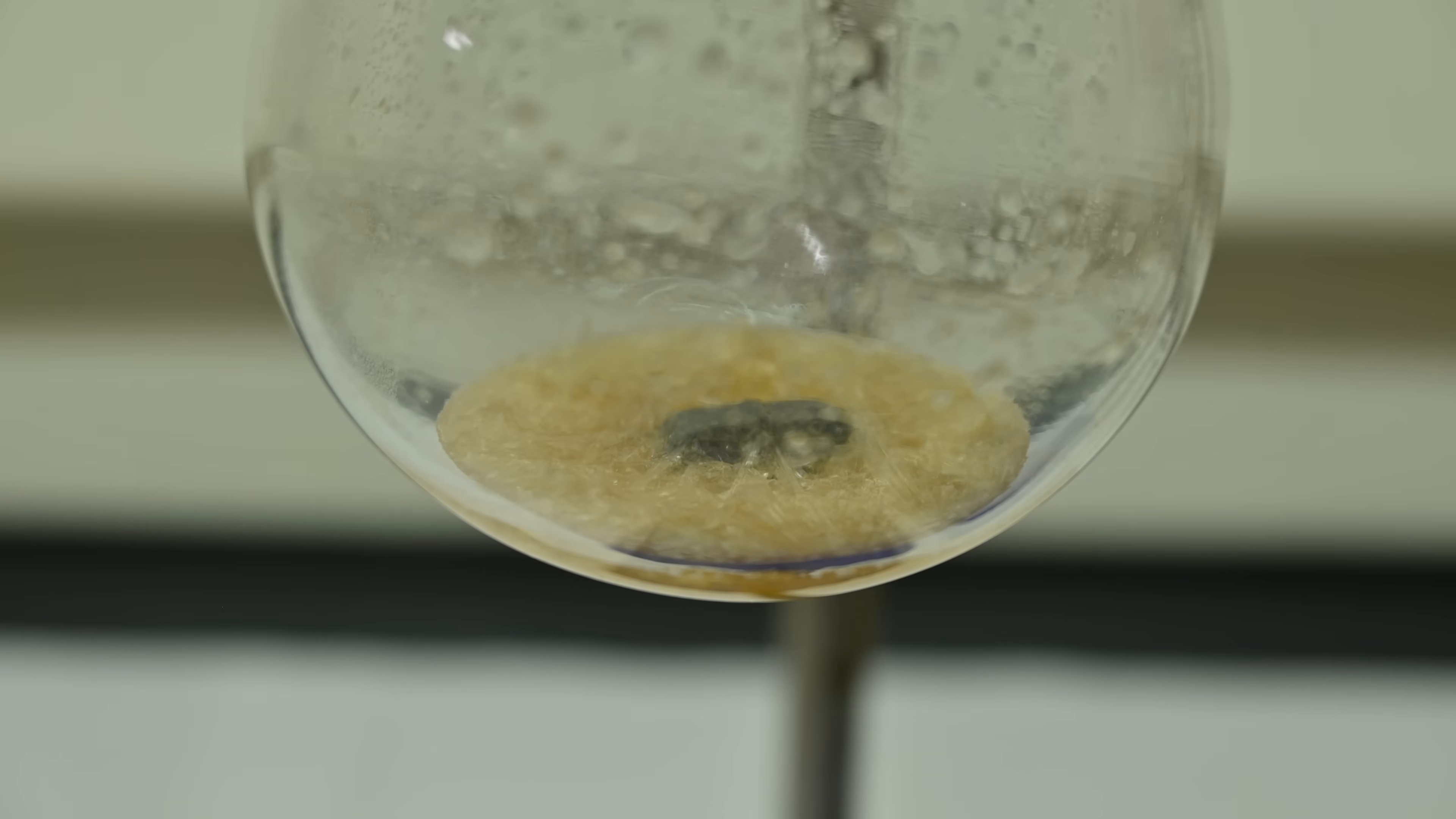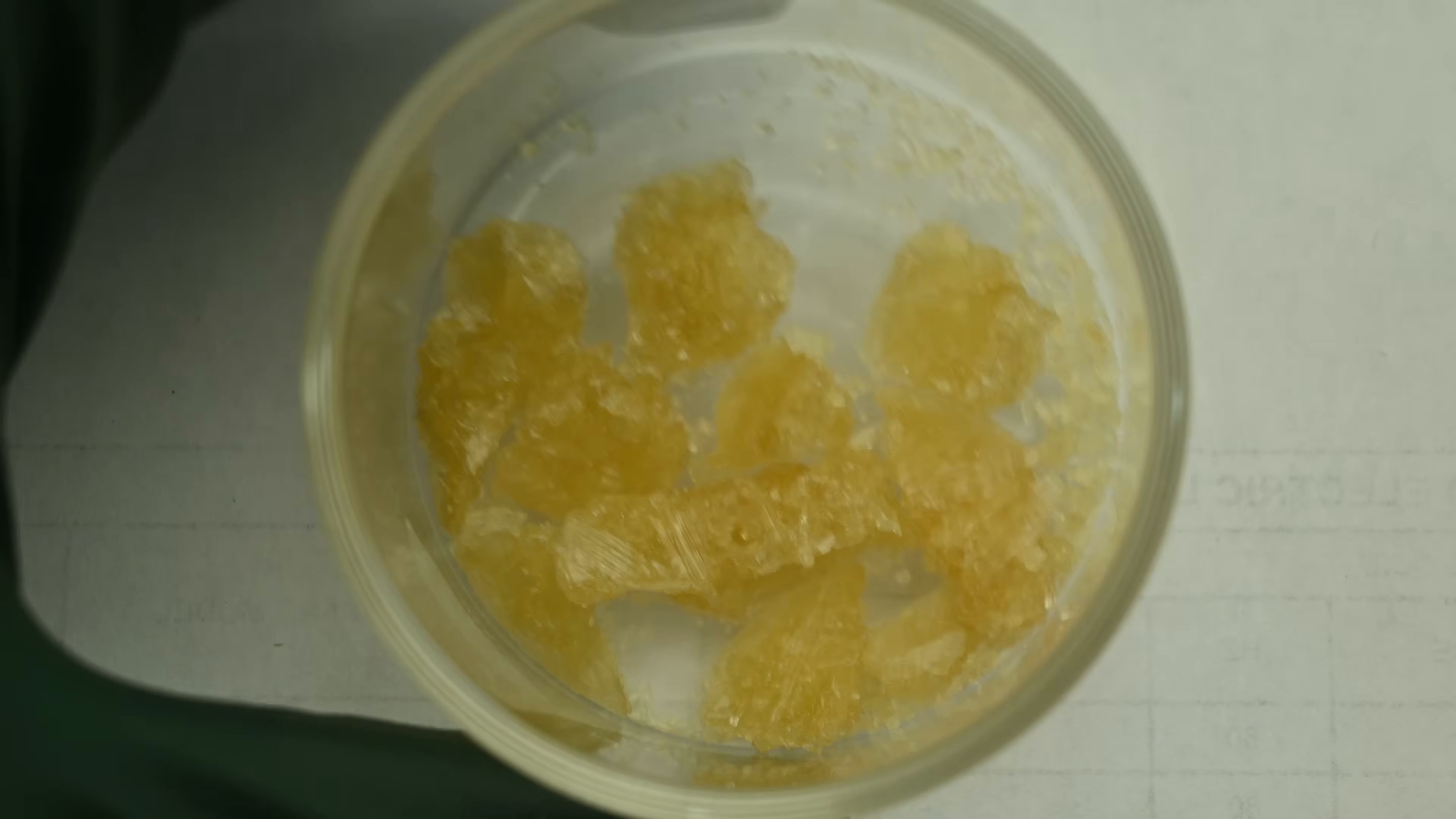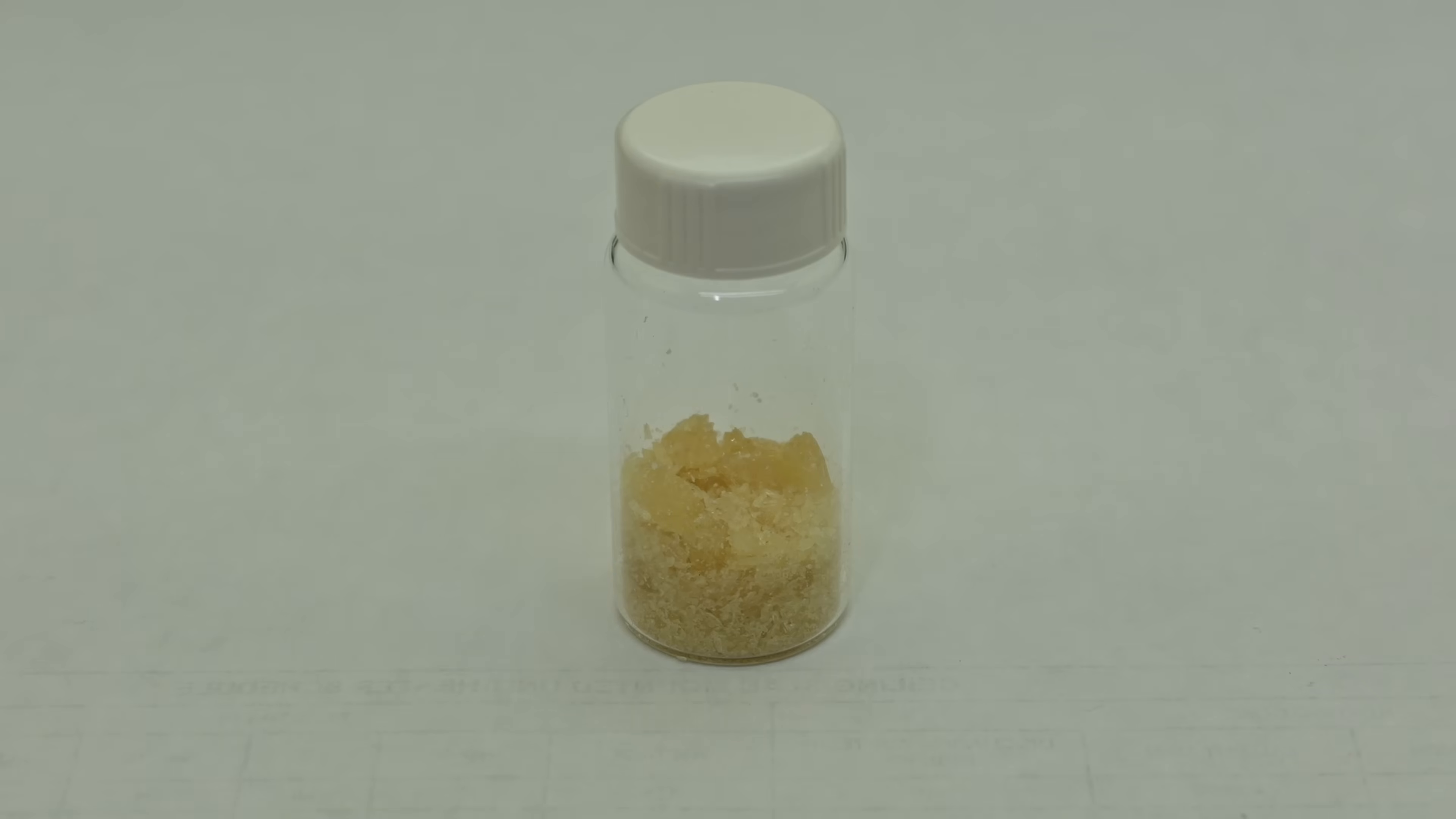I don't bother purifying it since I don't need it all that pure for the next steps. I simply scrape out the solid product which yields just over 6.4 grams of P-nitrobenzoyl chloride, ready for the next part of the reaction.